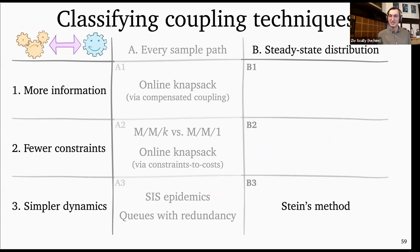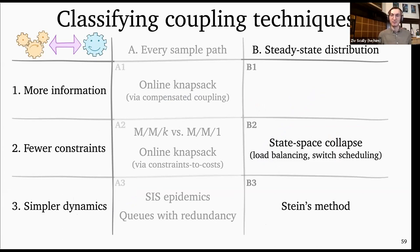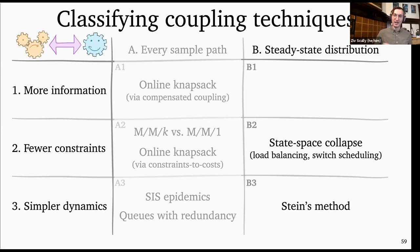Putting state space collapse into our classification: I think of it as comparing against the MM1 system, which is a less constrained version of the JSQ system — rather than having to commit to serving a job on a particular server, you can use the full server for whatever job happens to be in the system. We're able to show that the JSQ system is close to the MM1 system not by following exactly what happens with every single job, but by showing that the distribution of the JSQ system is close to the center line. So it is inherently a steady state distribution property rather than a sample path property.